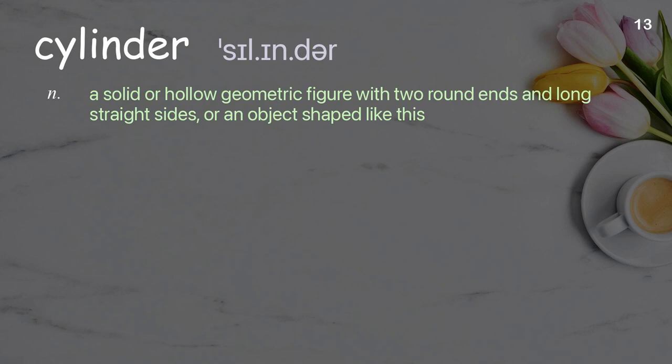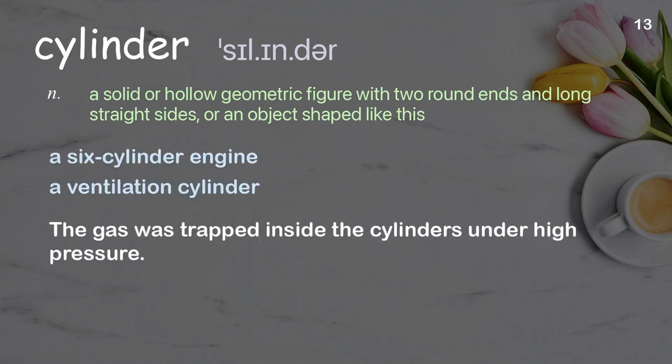Cylinder: a solid or hollow geometric figure with two round ends and long straight sides, or an object shaped like this. Examples: a six-cylinder engine, a ventilation cylinder. The gas was trapped inside the cylinders under high pressure.